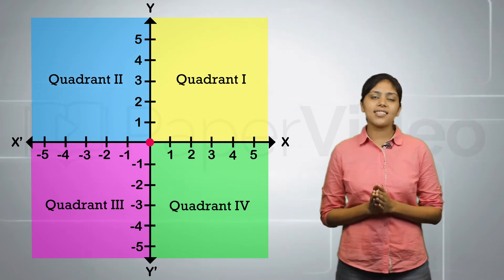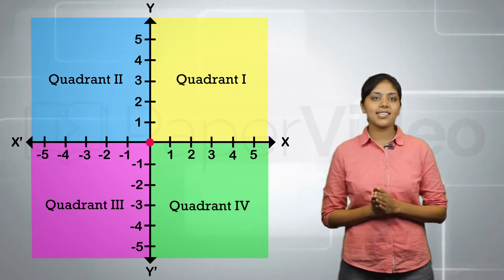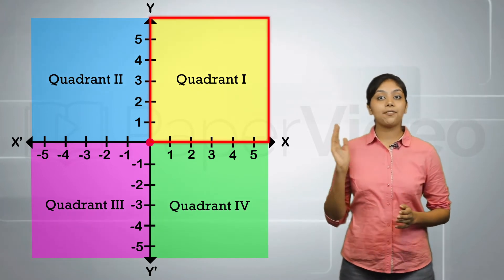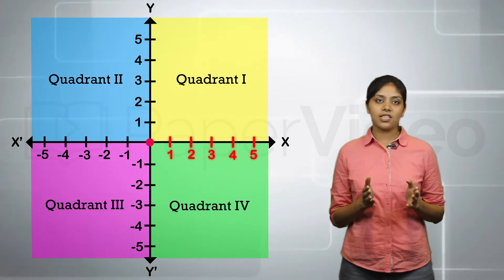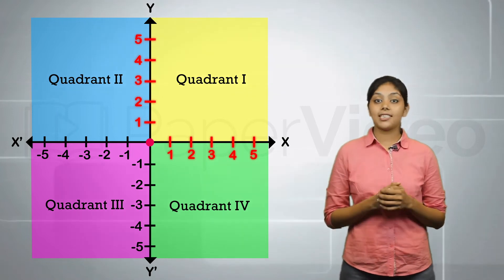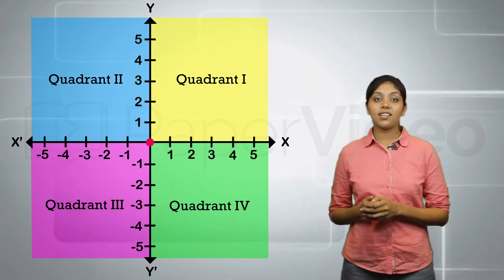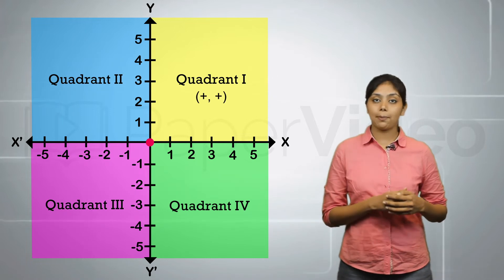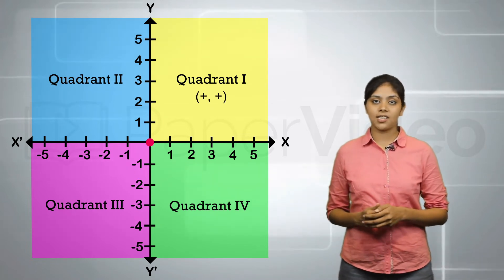Now let us understand the sign convention used in the x- and y-coordinates of a point. In the first quadrant, the x-coordinate and the y-coordinate are both positive. This means that any point lying in the first quadrant will have both its abscissa and ordinate positive.